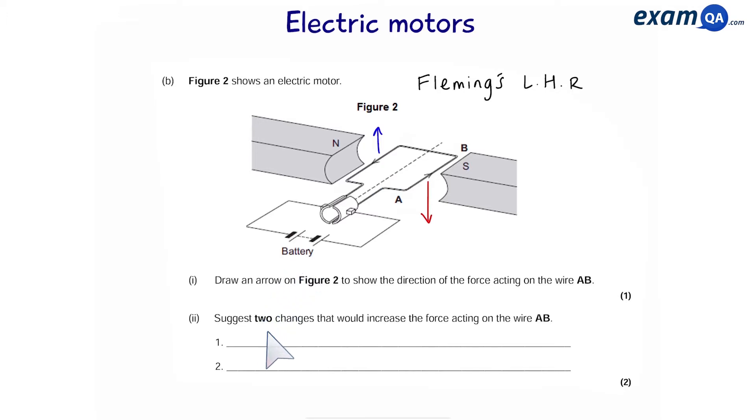Part two - suggest two changes that you could do to increase the force acting on the wire AB. Number one, we could use a stronger magnet, or we could have more current flowing through the wires.